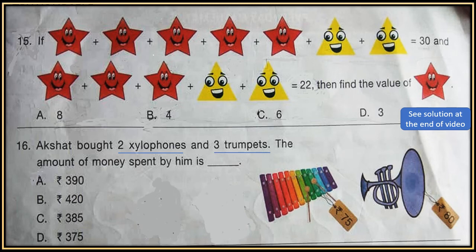Question 16: Akshet bought 2 xylophones and 3 trumpets. The amount of money spent by him is what? Now cost of 1 xylophone and 1 trumpet is given. Akshet bought 2 xylophones and 3 trumpets, so calculate that cost and then find out how much money he spent.